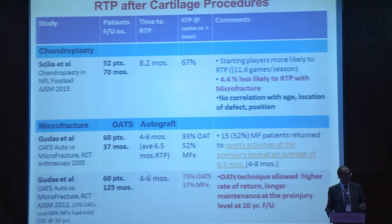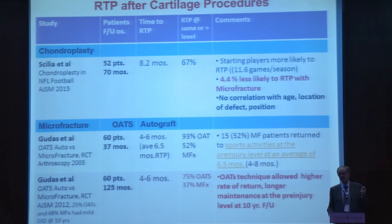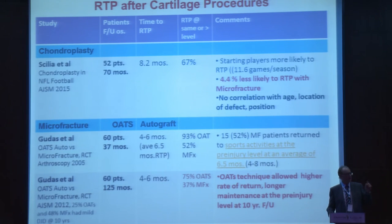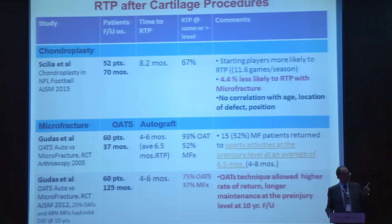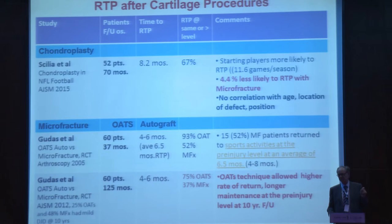Another study of OATS autograft by Gudis is very nice in that it has two different timepoints — about two to three years and almost 10 years of follow-up. In the short term, OATS autograft showed 93% return to sport versus 52% with microfracture. But at 10 years, 75% of OATS patients were still functioning in sport compared to only 37% of microfracture patients. That's the durability issue I talked about.